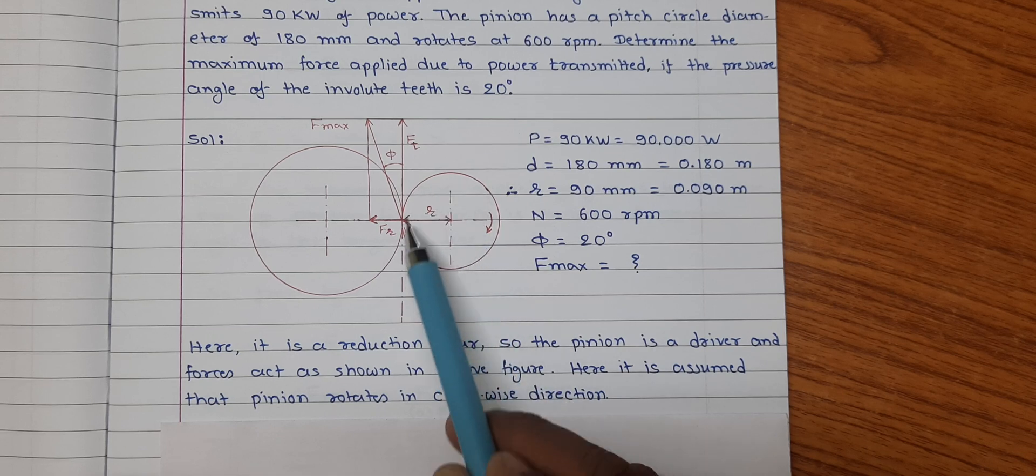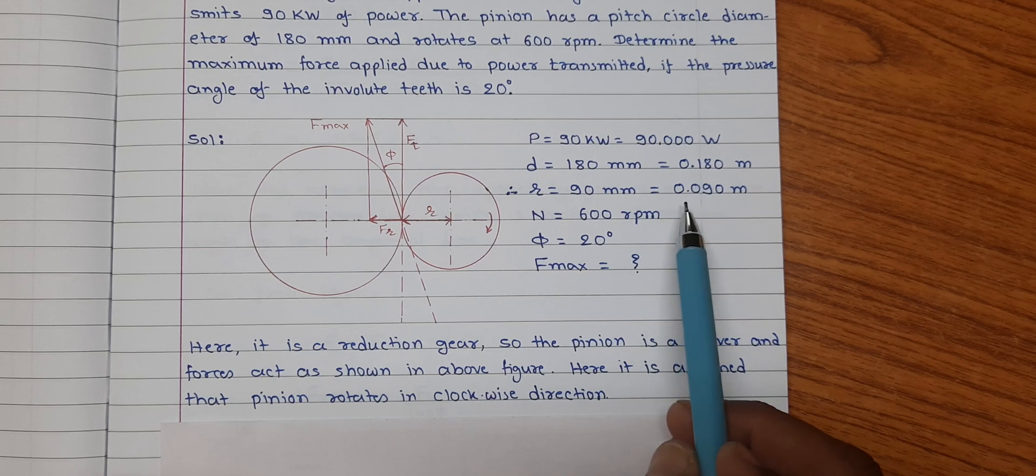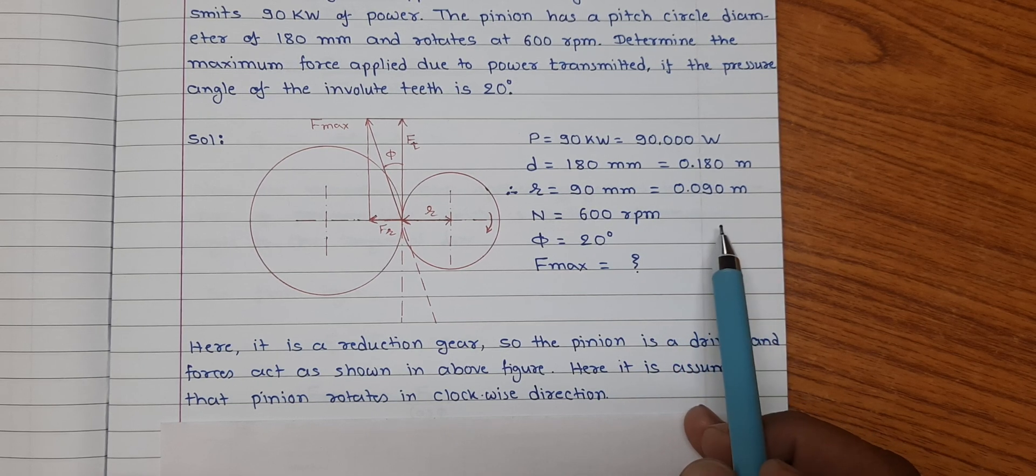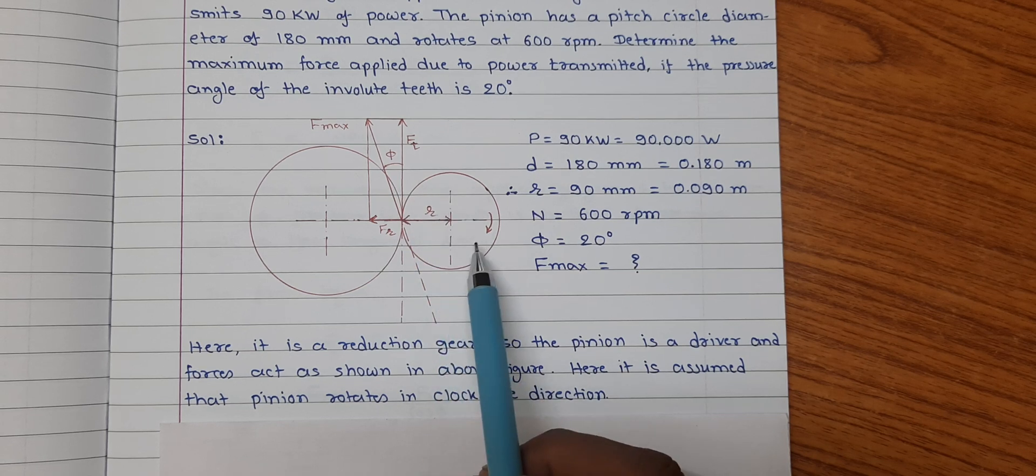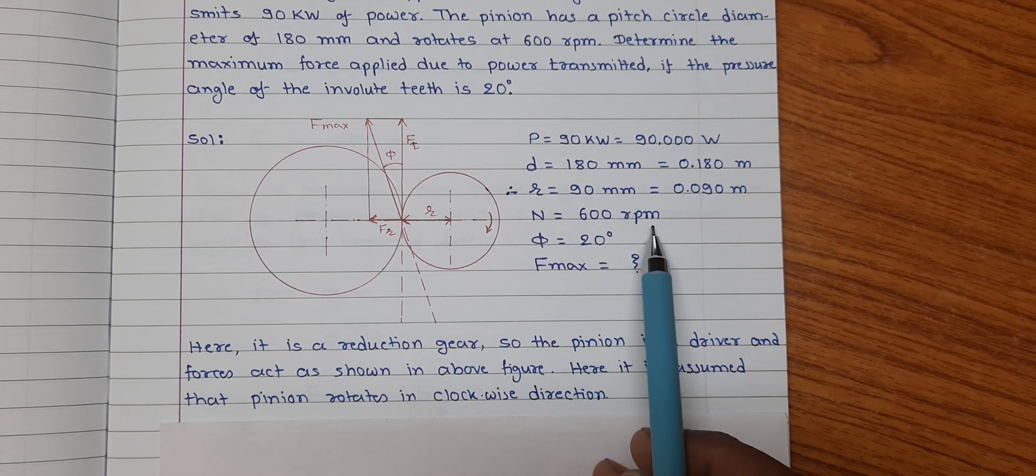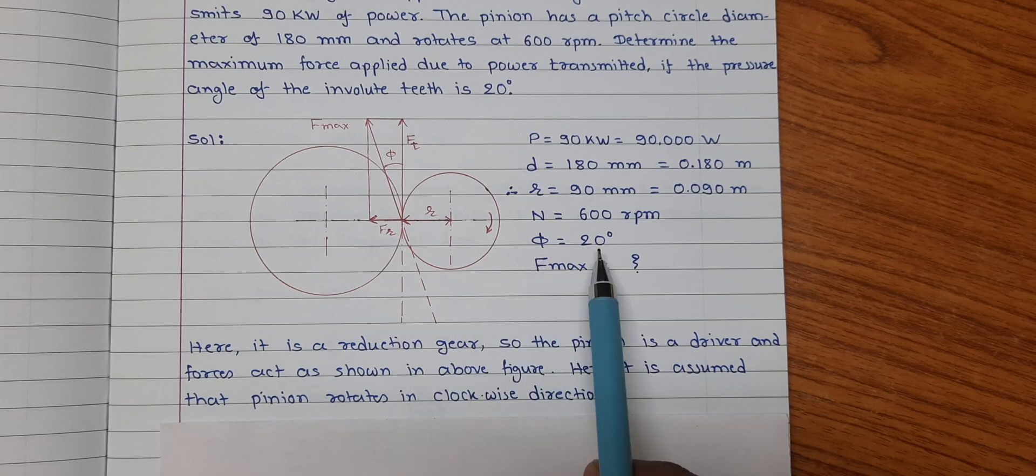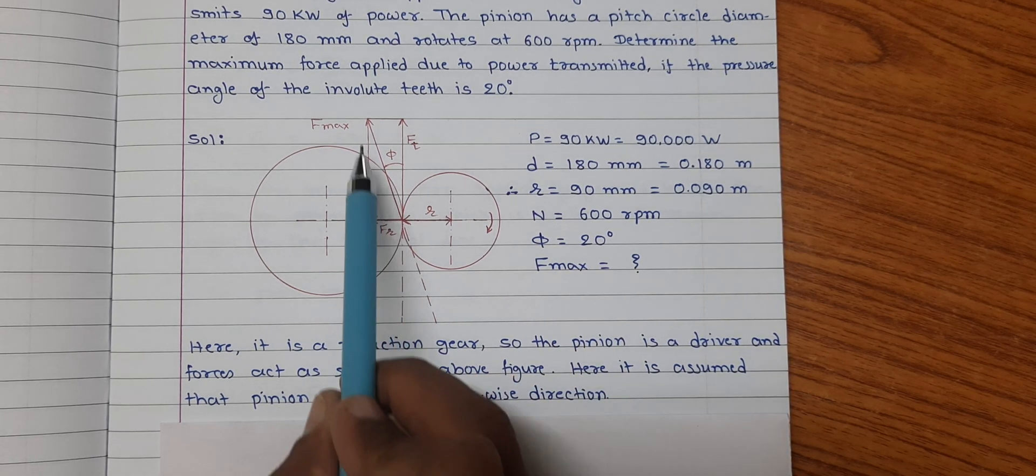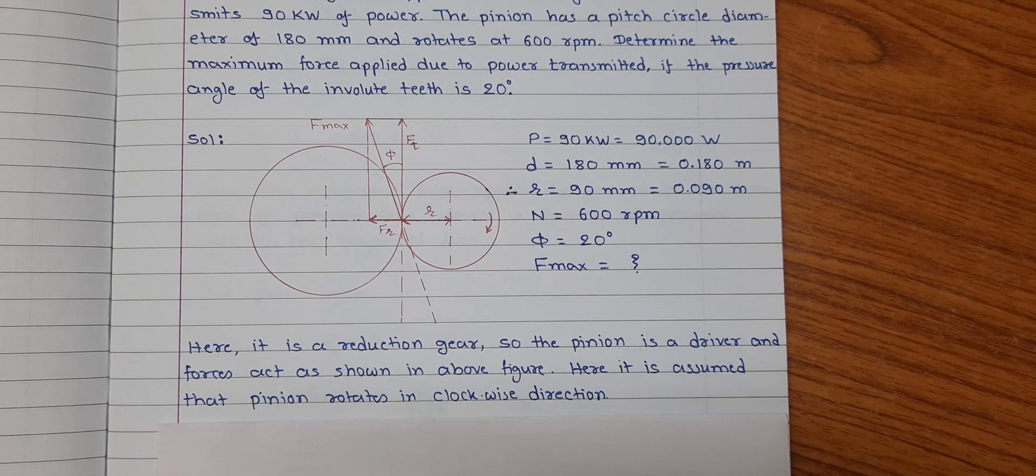Hence the pitch radius of this pinion r will be 90 mm, that is 0.090 meter. It is given that the pinion rotates at speed n is equal to 600 rpm, and the pressure angle of this gear profile involute is given 20 degree. Here we have to find out this f maximum exerted while action of gear.